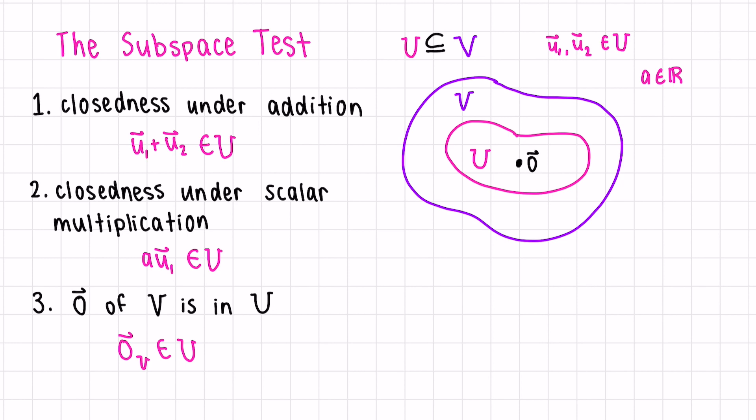This subspace test is useful if you're either proving a set U is a vector space, or if you're trying to prove it's not a vector space. You don't have to bother considering all the 10 axioms. You can just focus on these three. Find one that's false and then show a concrete example.